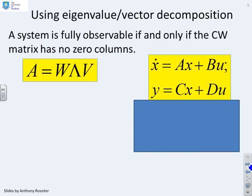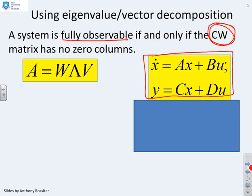Let's use some eigenvalue eigenvector decompositions and you'll remember that we did use these when we discussed controllability. So a system is fully observable if and only if the CW matrix has no zero columns. So what I'm doing is I'm starting with my state space model in standard form. So x dot equals ax plus bu, y equals cx plus du. I'm doing the eigenvalue eigenvector decomposition, a equals w lambda v.